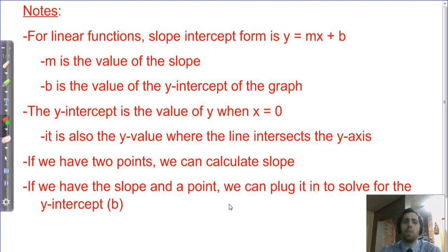b is the value of the y-intercept of the graph. Well, what's that mean? Well, the y-intercept is the value of y when x equals 0. Well, what does that mean? Well, if you think about it, we're used to graphing points. So if x equals 0, then on the coordinate plane, that means we don't move to the right or the left from the origin. It means we're just going to move up or down on this y-axis.